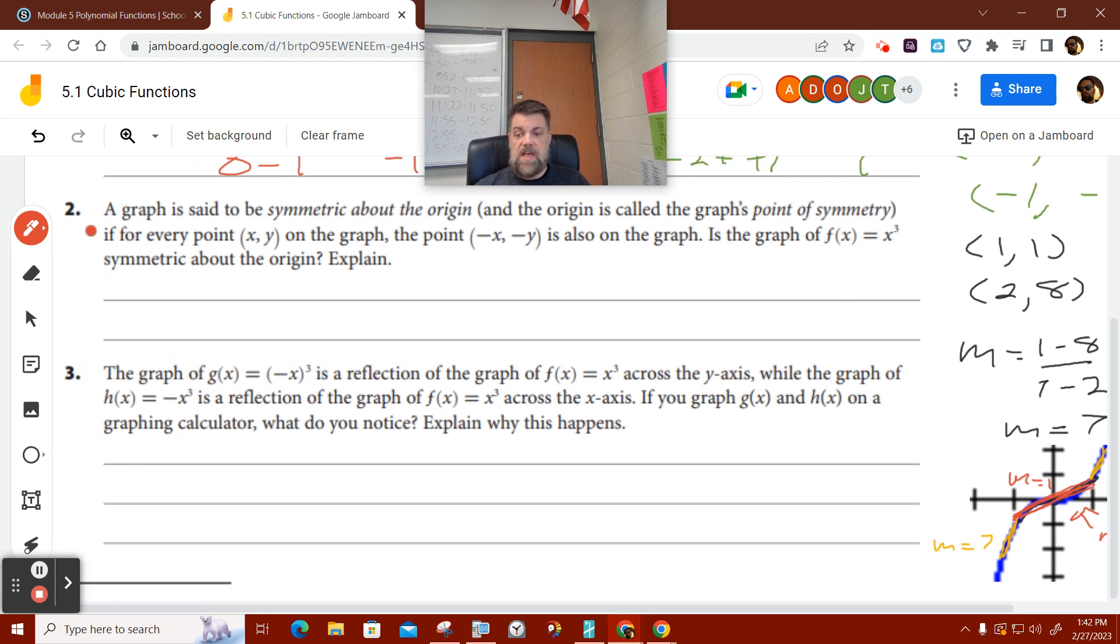So then part two says, A graph is said to be symmetric about the origin. The origin is called the graph's point of symmetry. For every x, y, there is a point negative x, negative y on the graph. Is the graph f of x equal to x cubed symmetric about the origin? Yes. And then you just say x, x does in fact have a negative x, negative y. Another way that you could write that is, is that negative f of negative x is equal to negative x cubed. So it's a negative of whatever the original is.